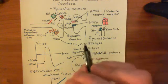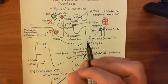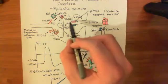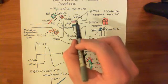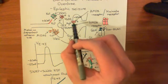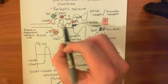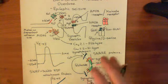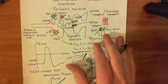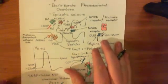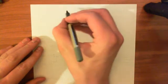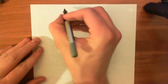Usually, NMDA does not actually contribute to the movement of positive charge into the cell because of the magnesium block at the synapse. So let's think about what's going to happen to the electrical potential difference across our post-synaptic cell.